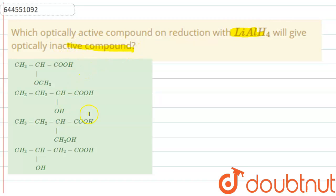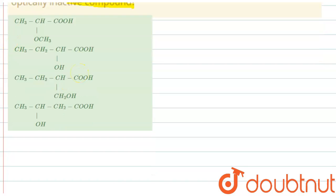Okay. So the four options are optically active and we have to find on reduction with LiAlH4 which will give an optically inactive product. So let's see all the options one by one.